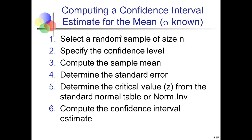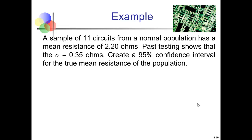To calculate a confidence interval for the mean when we know the true population standard deviation: collect a random sample of data, specify the level of confidence, compute the sample mean, determine the standard error and critical value from the normal table or norm inverse, and then compute the confidence interval.